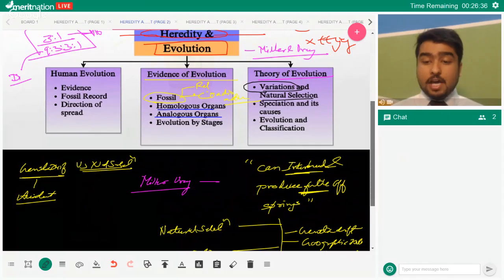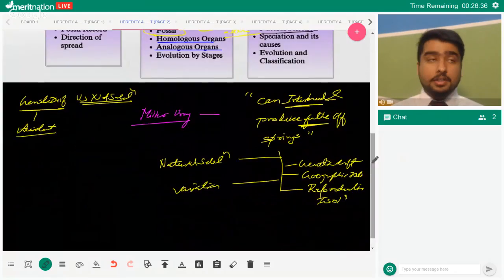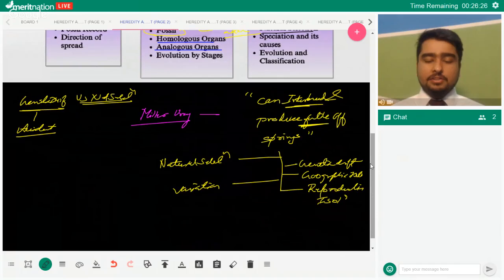Examples of analogous organs - think about a bat and a butterfly, both have wings. The purpose of both is to fly, but the ancestors of bats and butterflies are not one. So the wings of a butterfly and wings of a bat are analogous organs. They don't have same ancestry, but they have same design to suit their need.